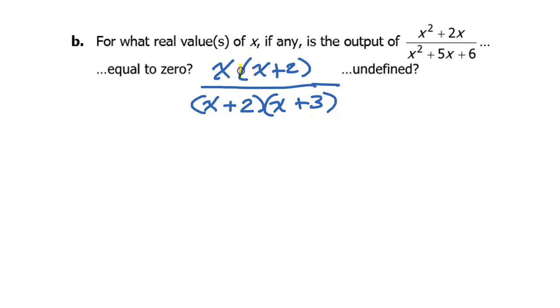Notice that we have this common factor of (x+2) in the numerator and the denominator. That's where holes come from. So we're going to have a hole. There's going to be a hole at x equals negative 2. So that is an undefined value.